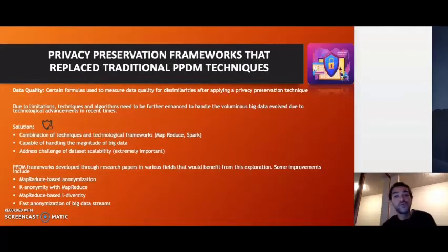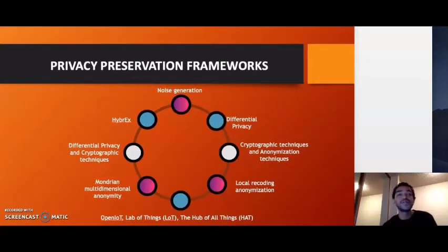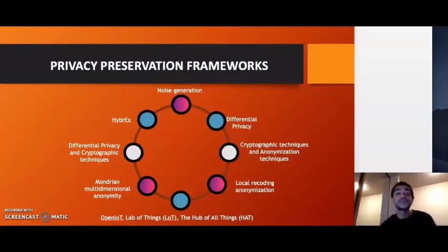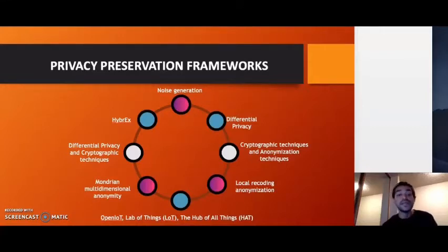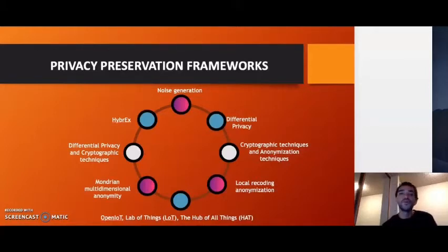Some of these techniques include noise generation — based on the concept of hiding a needle in a haystack — using the Apriori algorithm with a MapReduce framework. Then we have differential privacy for protection of body area networks in the big data environment, cryptographic techniques combined with anonymization techniques, local recoding anonymization with MapReduce for data privacy preservation on the cloud, big data privacy for the Internet of Things era, differential privacy and cryptographic techniques for biomedical research, and HyperX for preserving security and privacy for healthcare data. We'll now move on to Amritpal Singh for more details about data privacy with the Internet of Things.